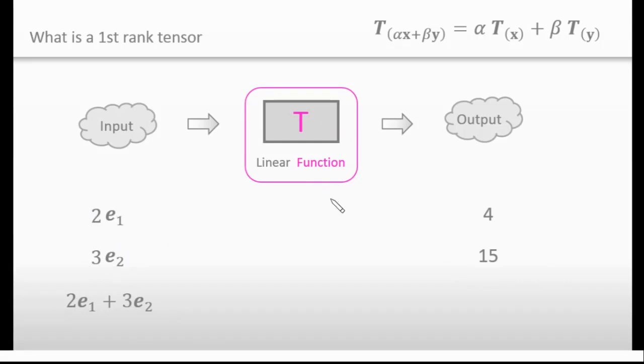And as this function is linear, the output will be this value. This is formed by the addition of this and this as well.